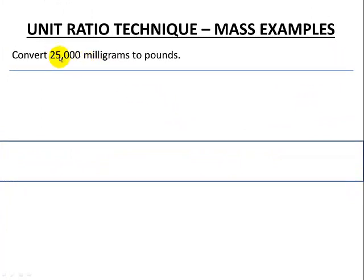Another mass example. We're going to convert 25,000 milligrams to pounds. So again, we have to recognize metric system, imperial system. Standard process. Start with our given measurement in units. So 25,000 milligrams.